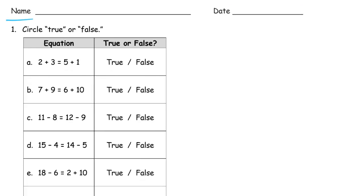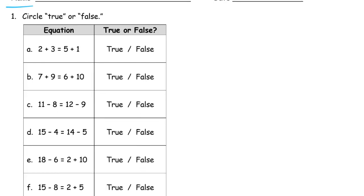We're circling true or false. The way to do this is to figure out—we have two expressions and this equal sign in the middle says that they have to be the same. They have to be equal expressions. If they are, then it's true. If they are not equal, then it's false.